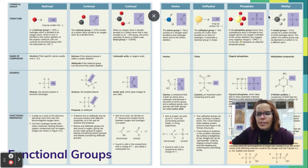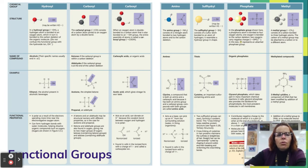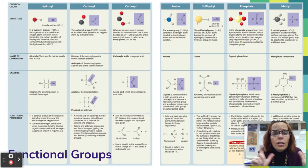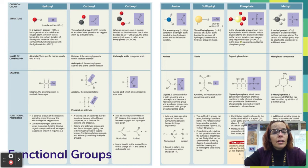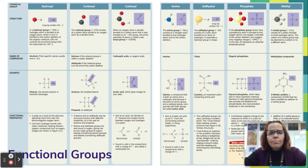Now I want you to write down the seven functional groups that are super important in biological molecules. All you need to write is the name and the shape. Hydroxyl is -OH: an oxygen bonded to one hydrogen. Carbonyl is a carbon double-bonded to an oxygen (C=O). The carboxyl group is very similar — it's a carbon double-bonded to an oxygen, but the carbon is also bonded to an OH hydroxyl group. That's called the carboxyl group, and sometimes it's called the carboxylic acid group — that's partly where the name amino acid or fatty acid comes from.